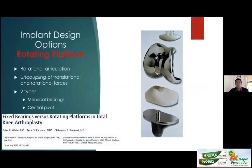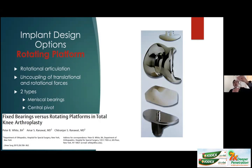What about different implant options available today? The first is the rotating platform. A fixed bearing tray locks the polyethylene in place, but a rotating platform allows rotation between the tibial polyethylene and the underlying tray to uncouple translational and rotational forces. This can be done with a central pivot or, more like the Biomet/Zimmer Oxford Unicondylar Knee, a meniscal bearing — a mobile bearing allowing uncoupling of rotational and translational forces.